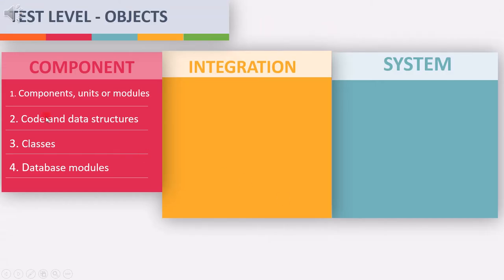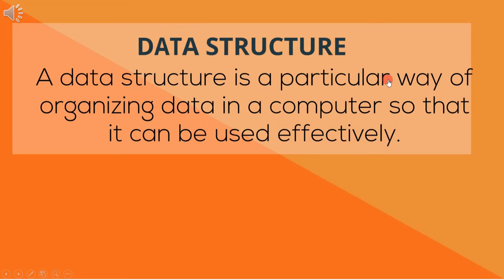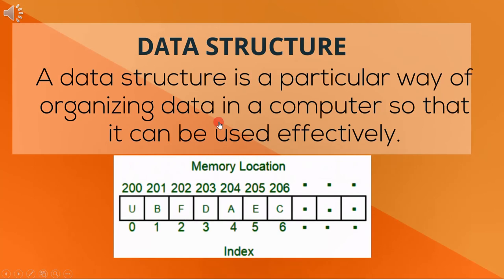The second test object is data structure. A data structure is a particular way of organizing data in a computer so that it can be used effectively. For example, we can store a list of items having the same data type using the array data structure. With this information, we can manipulate the data and check how a component behaves.